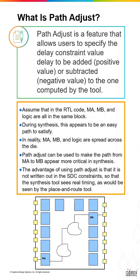Let's take the example here. We have a circuit in the register transfer logic code and you have MA, MB, and other logic in the same block. The path might seem to be an easy path to satisfy during the synthesis process. But in reality, MA, MB, and logic are spread across the die, so it isn't easy to meet timing for the backend.